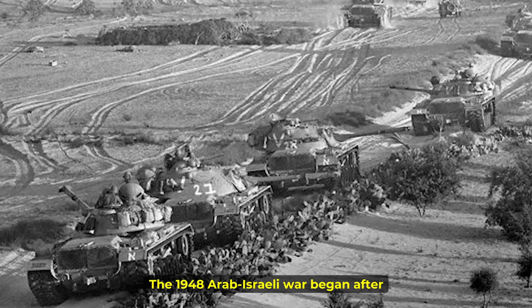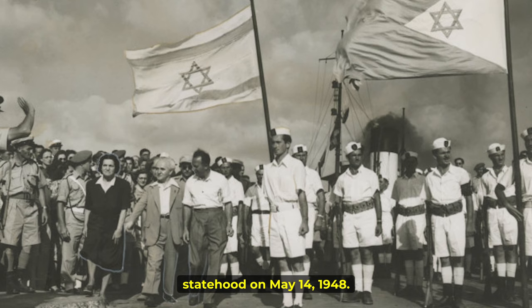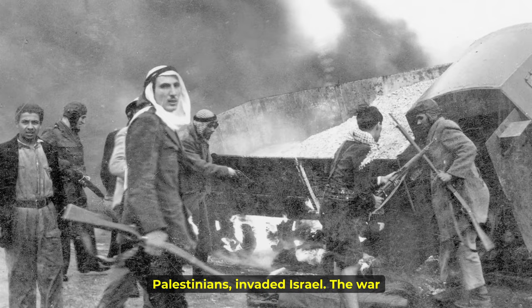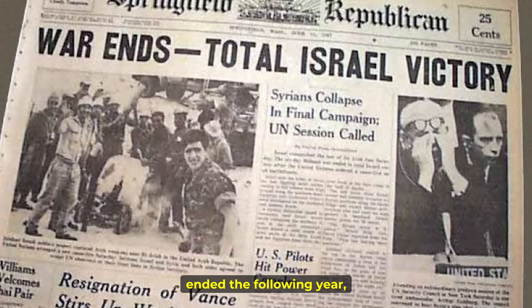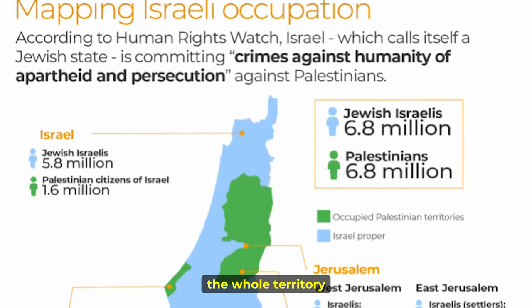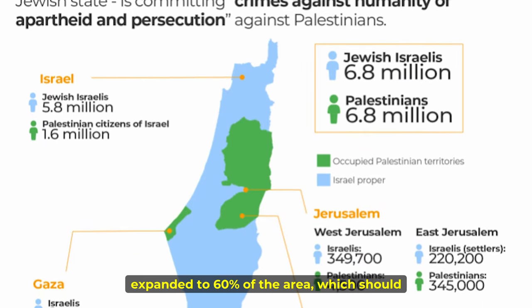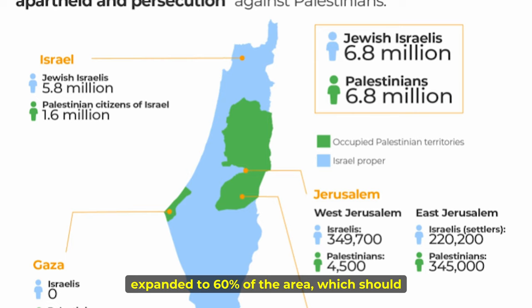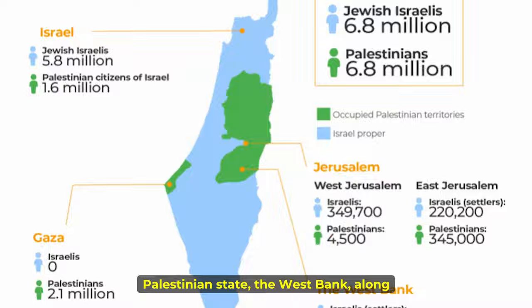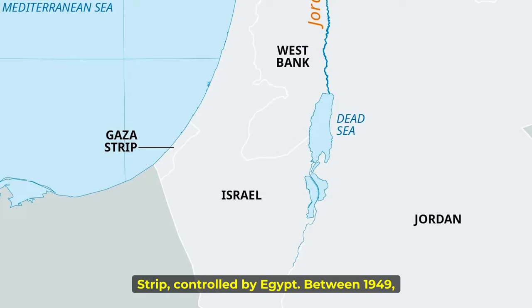The 1948 Arab-Israeli war began after Israel declared statehood on May 14, 1948. Arab countries, together with the Palestinians, invaded Israel. The war ended the following year with Israel emerging as the victor, and the whole territory divided into three regions: the State of Israel, which expanded to 60% of the area that should have been part of the Palestinian state; the West Bank, along the Jordan River, controlled by Jordan; and the Gaza Strip, controlled by Egypt.